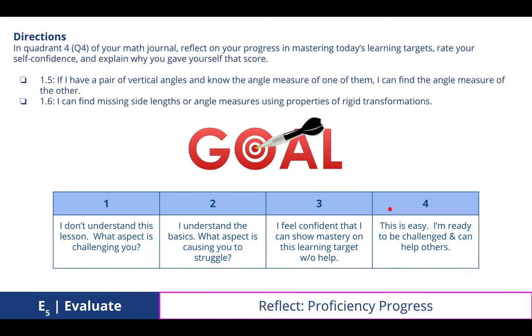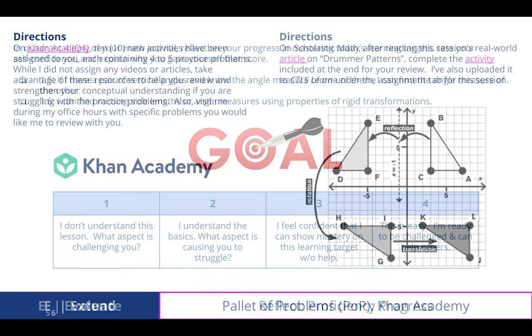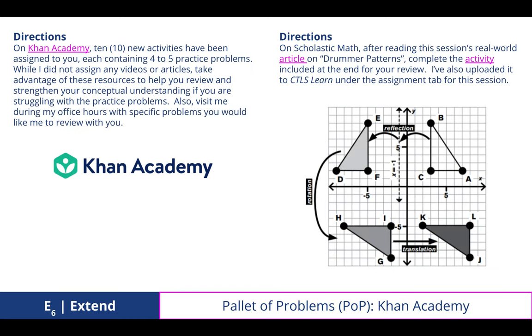In Quadrant 4 of your math journal, reflect on your progress in mastering today's learning standards. Rate your self-confidence and explain why you gave yourself that score. Just as a reminder that you have 10 activities in Khan Academy that you should be working on. You can always see me during office hours to go through specific problems you would like to review. And then work on that Scholastic Math article called Drummer Patterns, in which I've embedded the actual activity link to this presentation and the article itself.